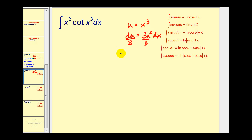So (1/3) du = x² dx. Now we'll rewrite this in terms of u. We know that x² dx is equal to (1/3) du.